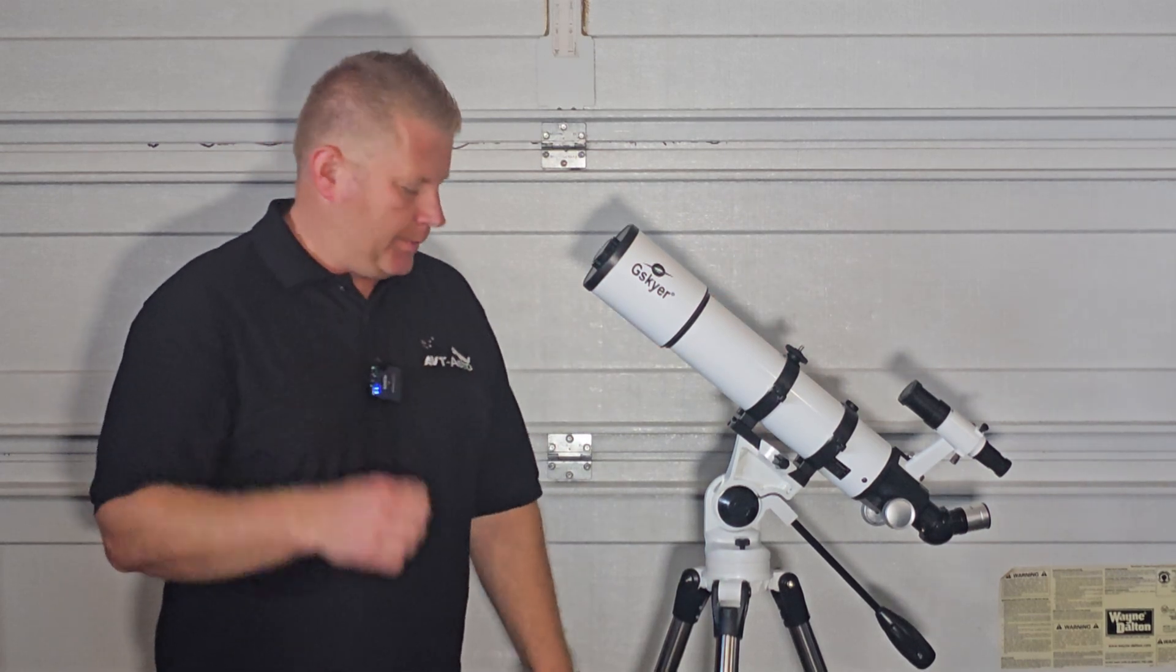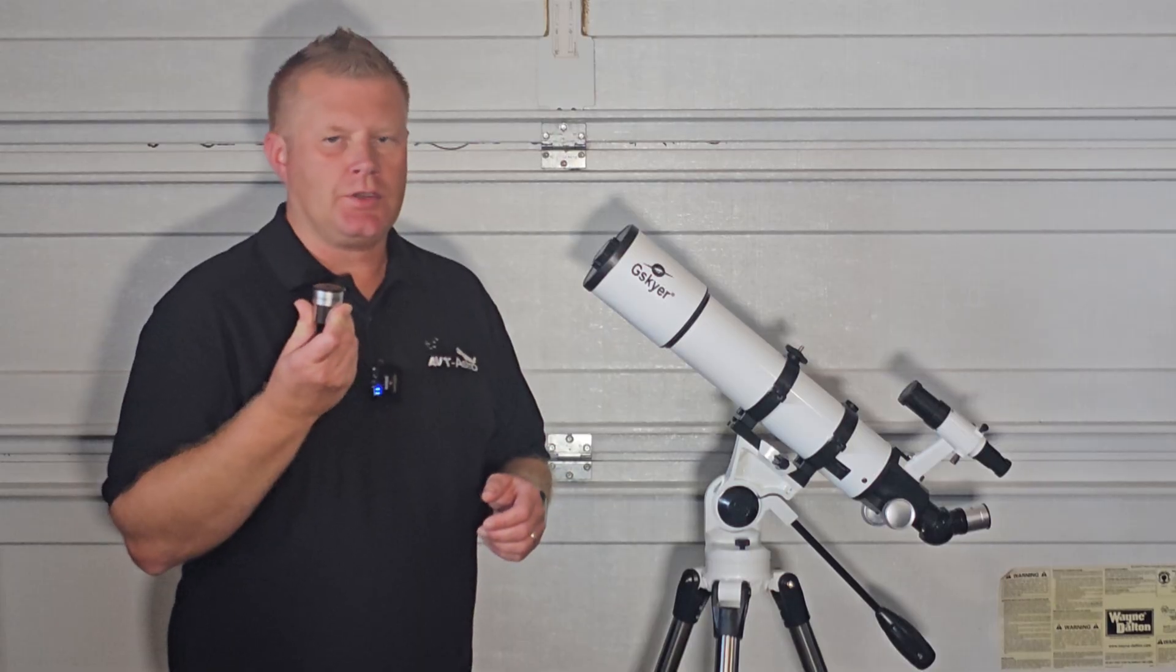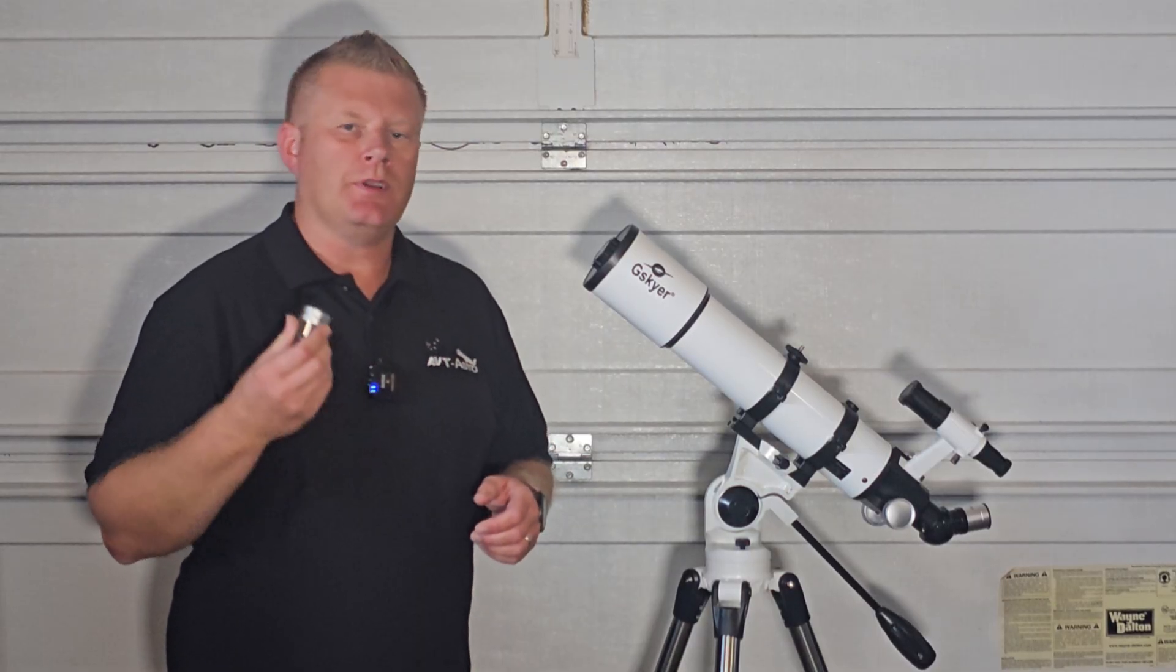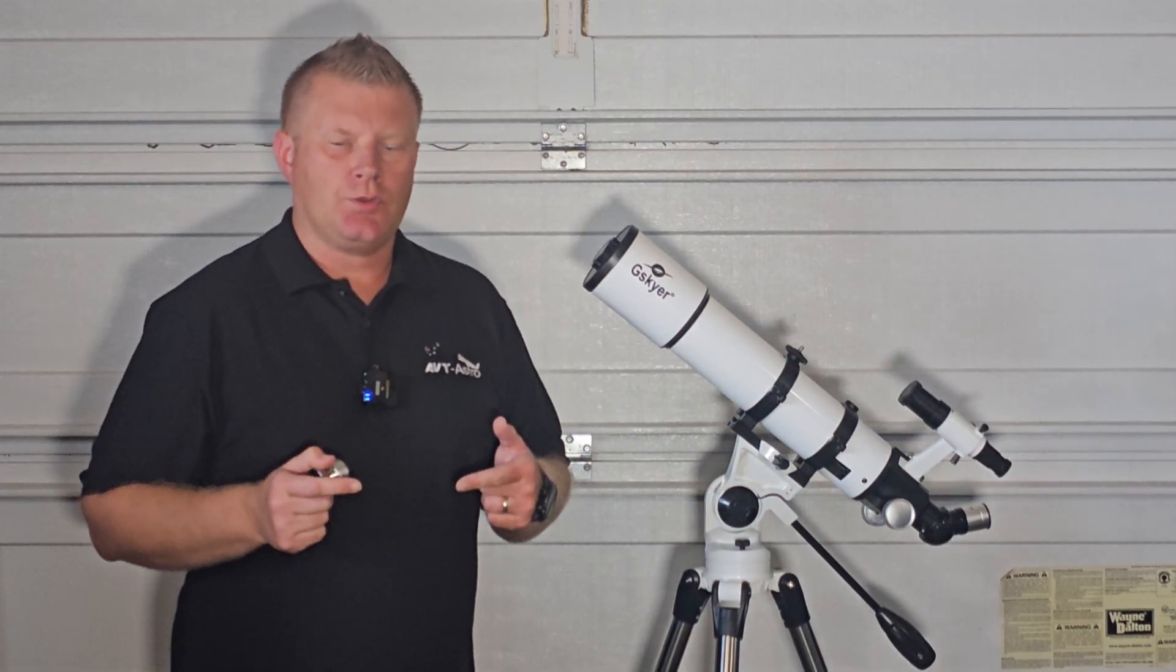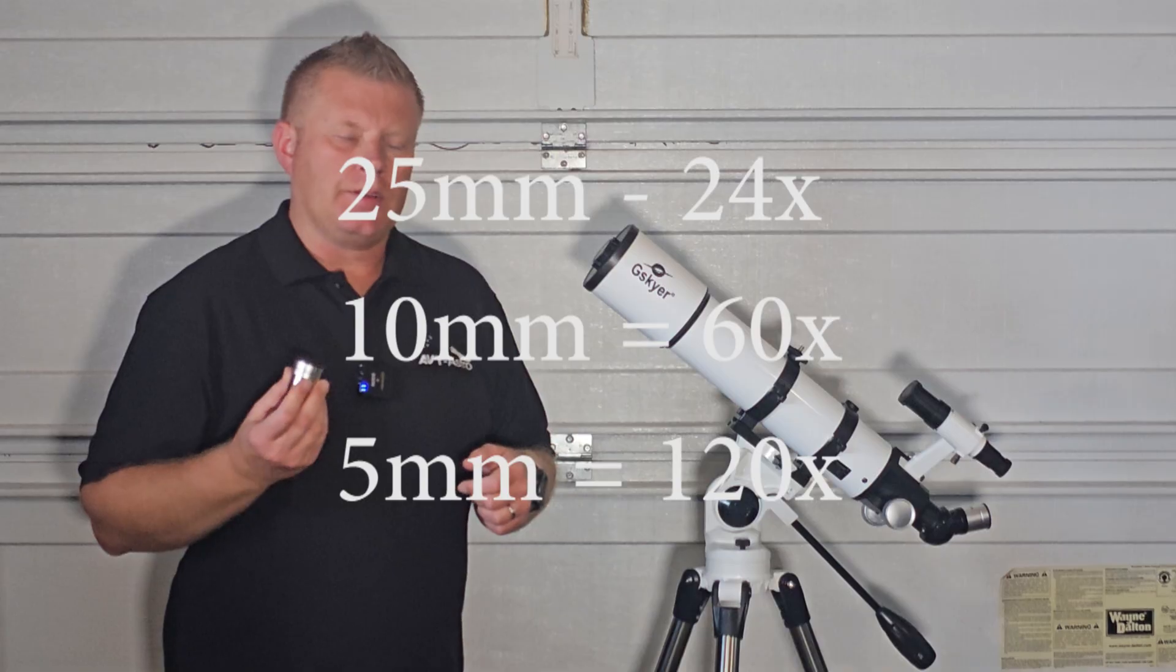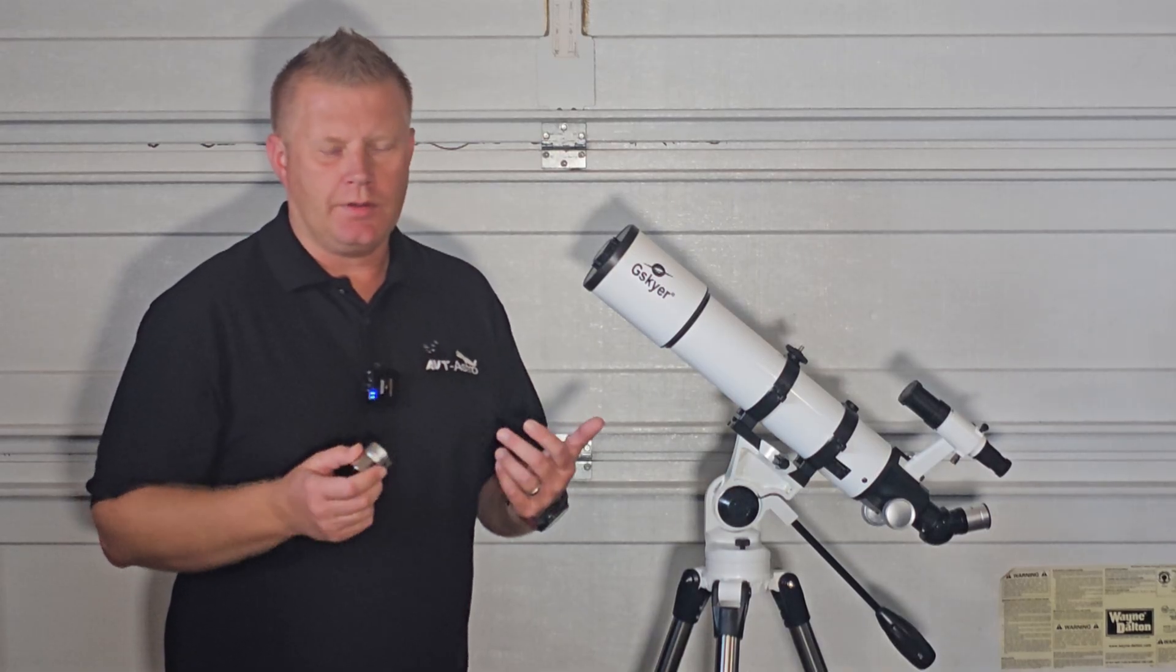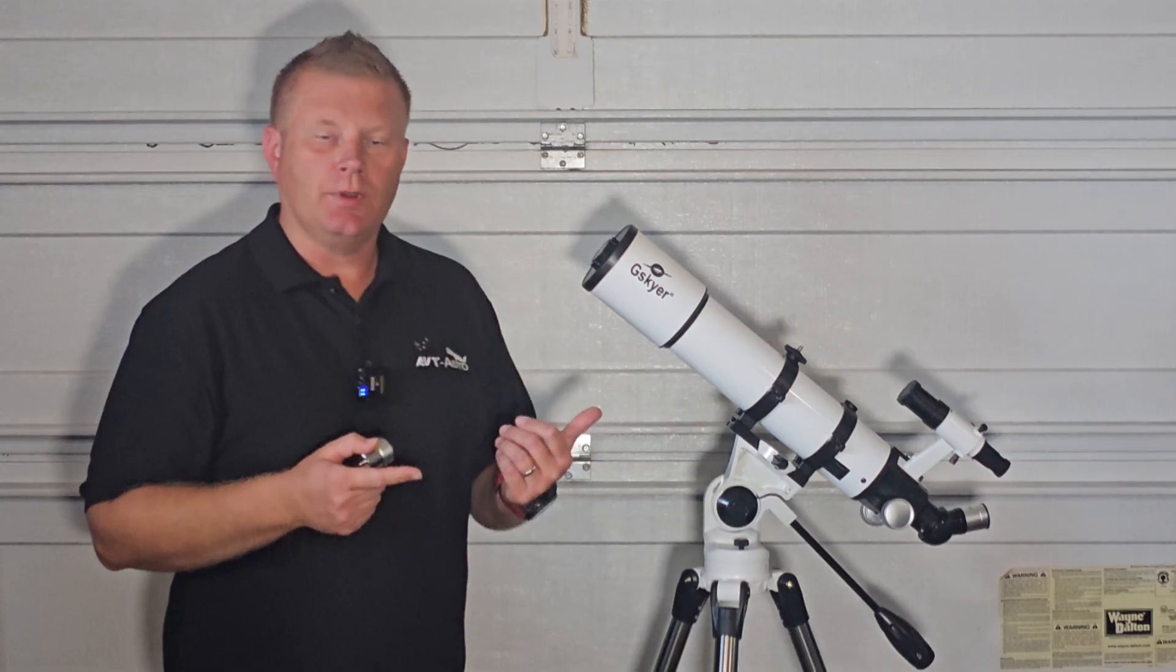It includes three eyepieces, which are these guys right here that you use to change the magnification of the telescope. It comes with a 25mm, a 10mm, and a 5mm. And I'm listing the magnifications right now if you know what that gets you. It also includes a 3x Barlow, which we'll kind of talk about why you probably really don't really even need that with this telescope a little bit later on.